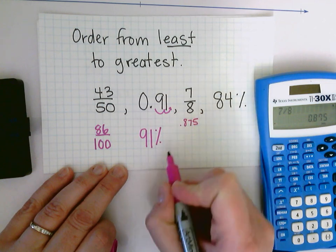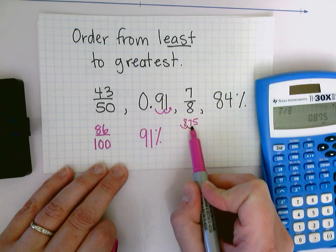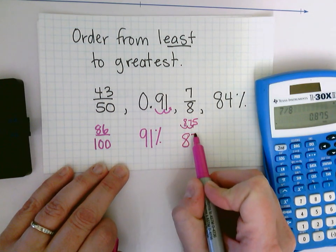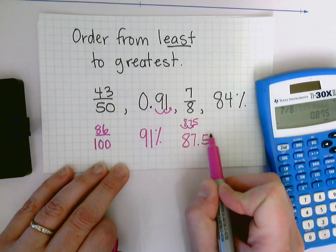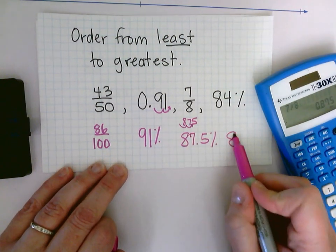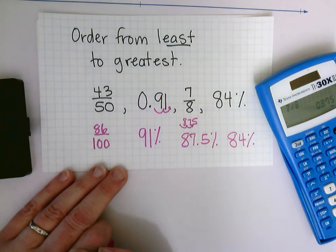So that's 875/1000. But to make it into a percent, I'm going to move that decimal point two jumps to the right when I multiply it by 100. So that's going to give me 87.5%. And 84% is already written as a percent, so we don't have to do anything with that one.